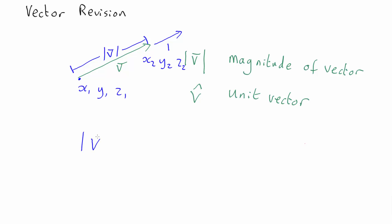Then the magnitude of the vector is just the square root of x1 minus x2 squared or it can be x2 minus x1 squared when you square it makes no difference.